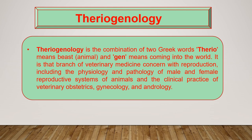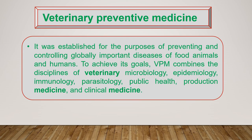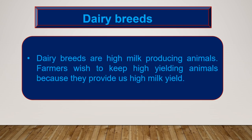Theriogenology is the combination of two Greek words: thereo means animal and gen means coming into the world. It is that branch of veterinary medicine concerned with reproduction, including the physiology and pathology of male and female reproductive systems of animals, and the clinical practice of veterinary obstetrics, gynecology, and andrology. Veterinary preventive medicine was established for the purpose of preventing and controlling globally important diseases of food animals and humans. To achieve its goal, veterinary preventive medicine combines the disciplines of veterinary microbiology, epidemiology, immunology, parasitology, public health, production medicine, and clinical medicine.